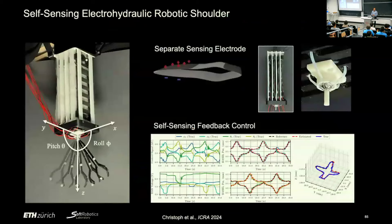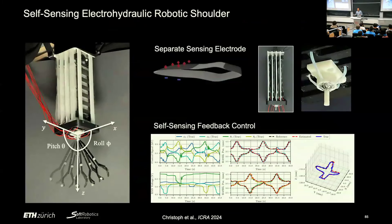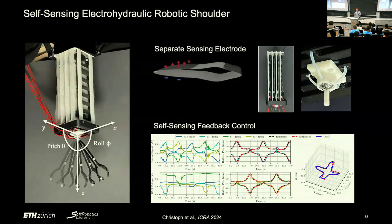In a bachelor project demonstrated at ICRA, a student coupled multiple HASEL muscles into a ball joint to show different shoulder-like motions — motivated by his interest in tennis. Currently, the clutch and muscle are in series, and future work needs to make this a more compact integrated design. A major challenge remains: we need compact high-voltage multi-channel drivers, and industry hasn't developed them for this use case yet.